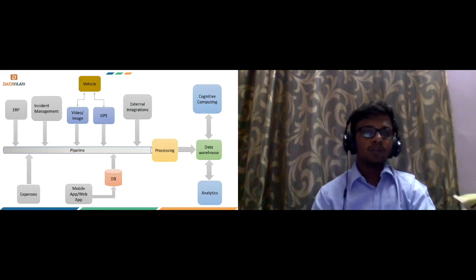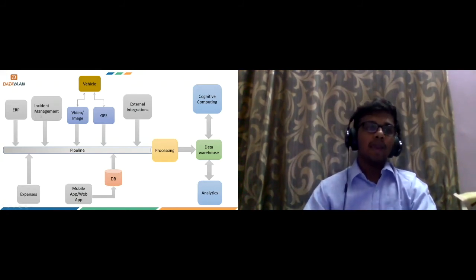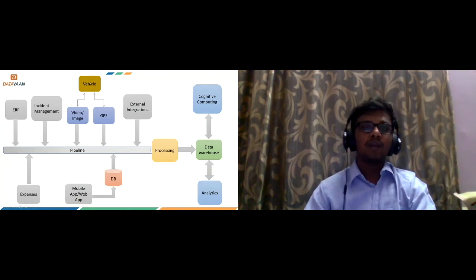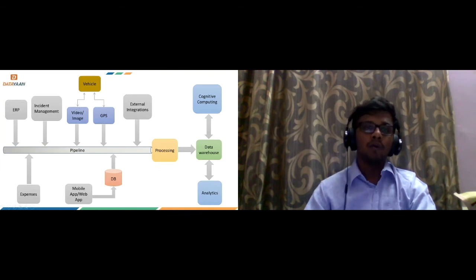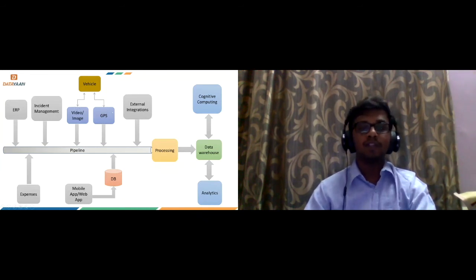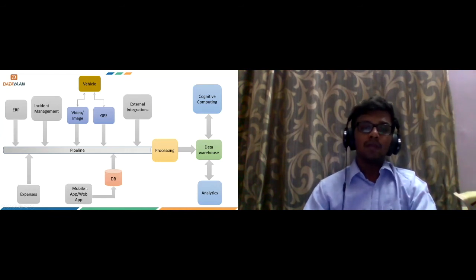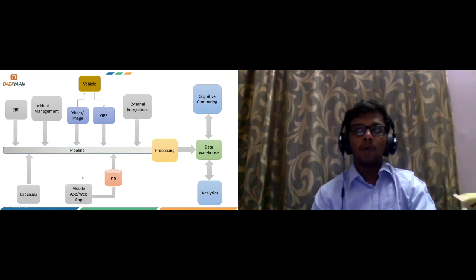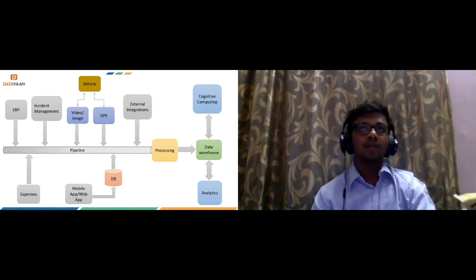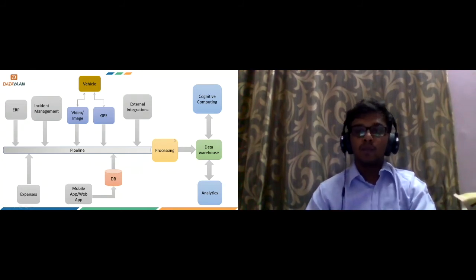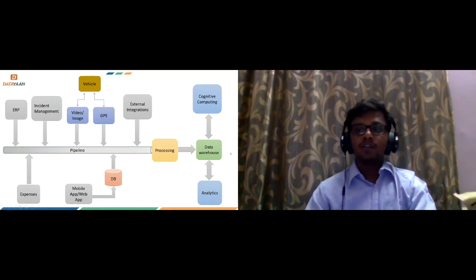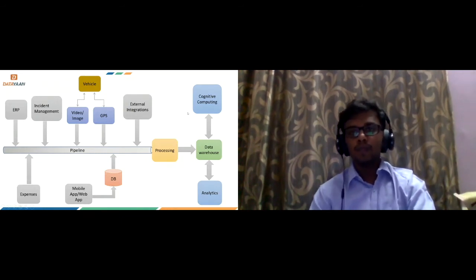So the overall setup looks something like this. We have the data pipeline, and then the ERP system is going to push its data into the pipeline. Expenses system is going to push, and then the incident management. Then we have the vehicle giving us the feed on video or image, and then we have the GPS information. And then we have external integrations. And then we also provide like a mobile app or web application which the drivers and other people on the site can use, and we collect that information as well digitally. And then we process it, and then we store it on the data warehouse.